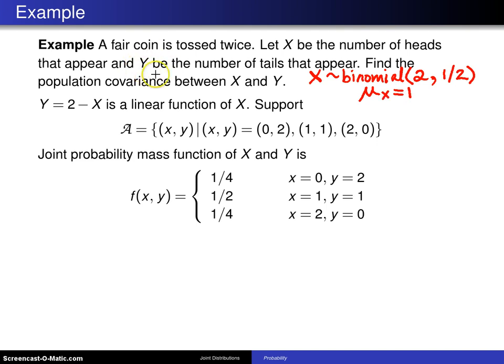But likewise, Y is the number of tails that appear. So if I were looking at Y alone, the univariate case, it will also be binomial and it will have parameters n and p, which are again 2 and one half, and the mean of the random variable Y will also be 1.